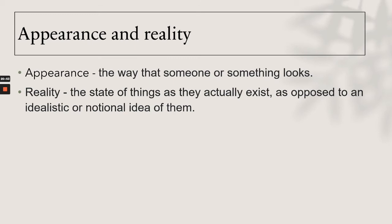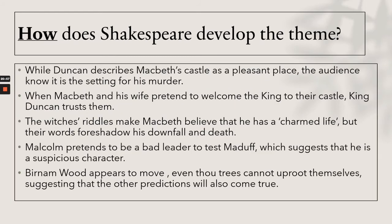Appearance is the way that someone or something looks; reality is the state of things as they actually exist. Shakespeare develops this theme: Duncan describes Macbeth's castle as a pleasant place, but the audience knows it is the setting for his murder. When Macbeth and his wife pretend to welcome the king, Duncan trusts them. The witches' riddles make Macbeth believe he has a charmed life, but their words foreshadow his downfall. Malcolm pretends to be a bad leader to test Macduff. Birnam Wood appears to move, suggesting the other predictions will also come true.